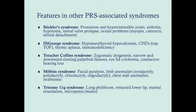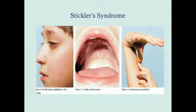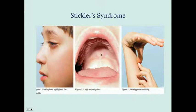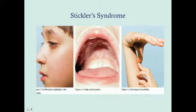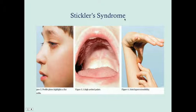Trisomy 11q syndrome — patients tend to have a long philtrum, retracted lower lip, mental retardation, and male infants will have micropenis. In Stickler syndrome, you'll note a small chin, high arched palate which could have been a cleft palate at one time, and joint hyperextensibility. Joint hyperextensibility in addition to the Pierre Robin sequence gives you a likely diagnosis of Stickler syndrome, which is a collagen defect with various genes that can be affected.